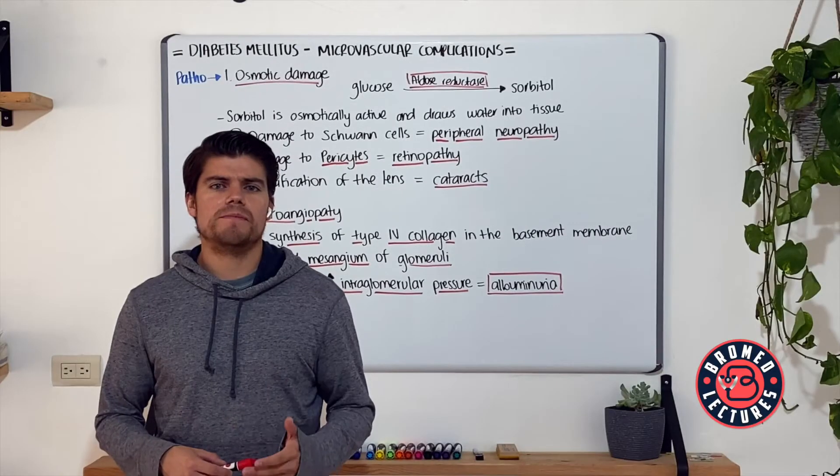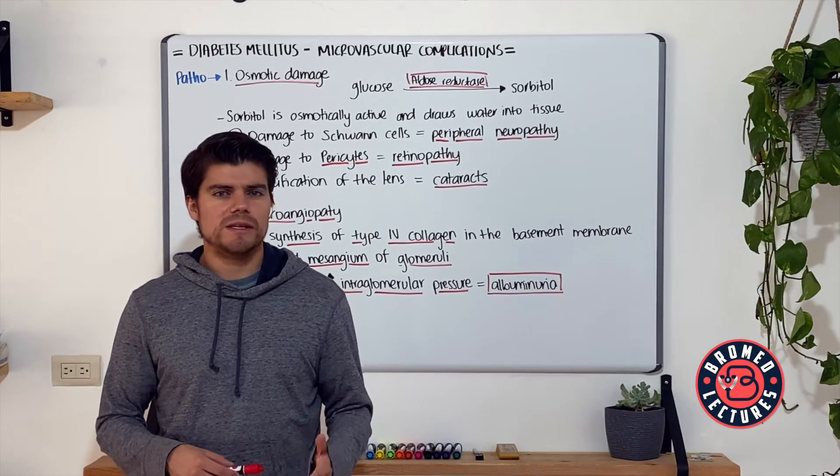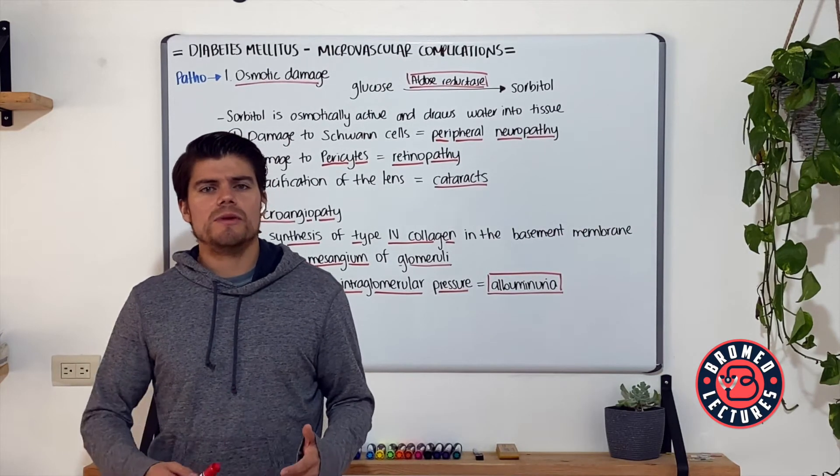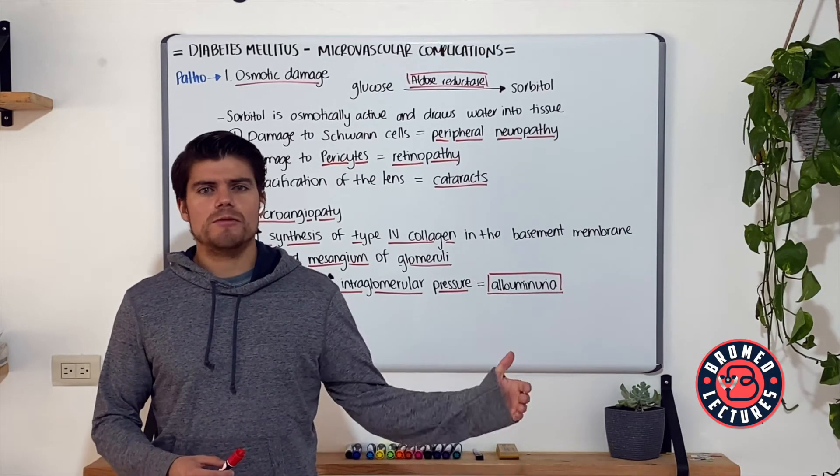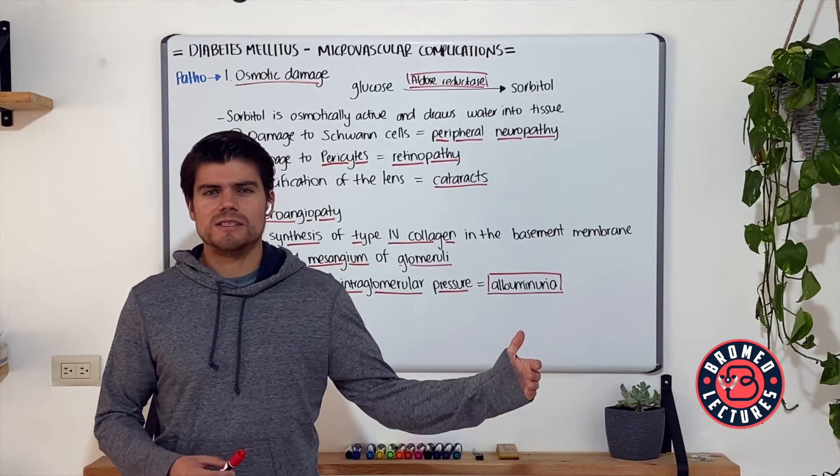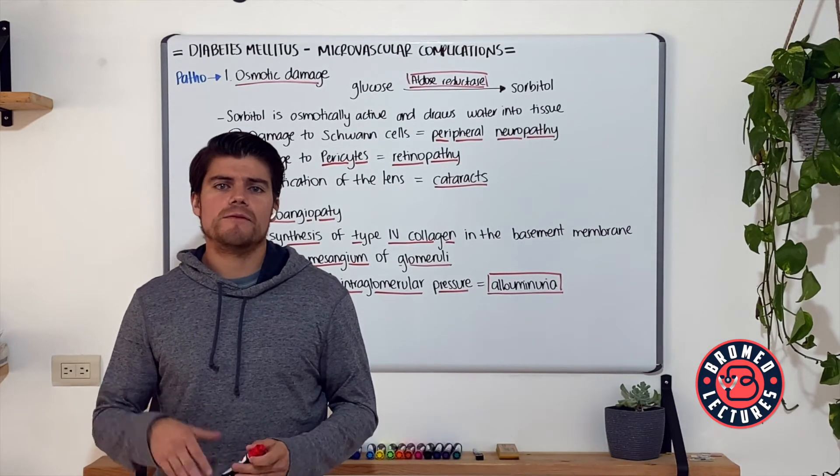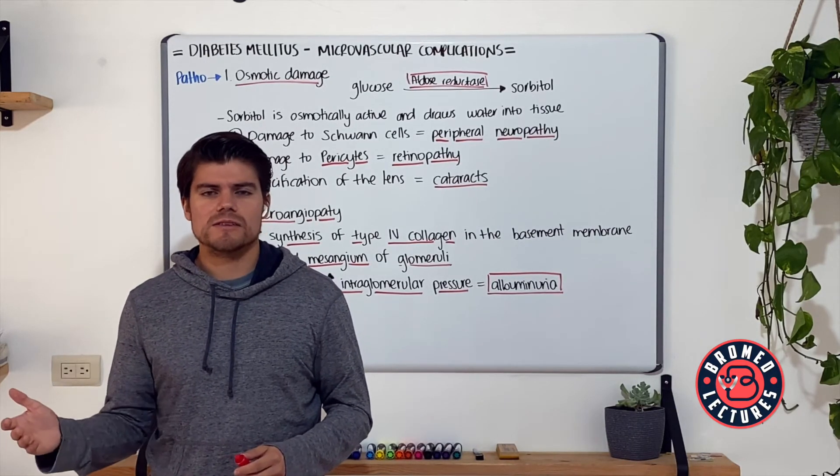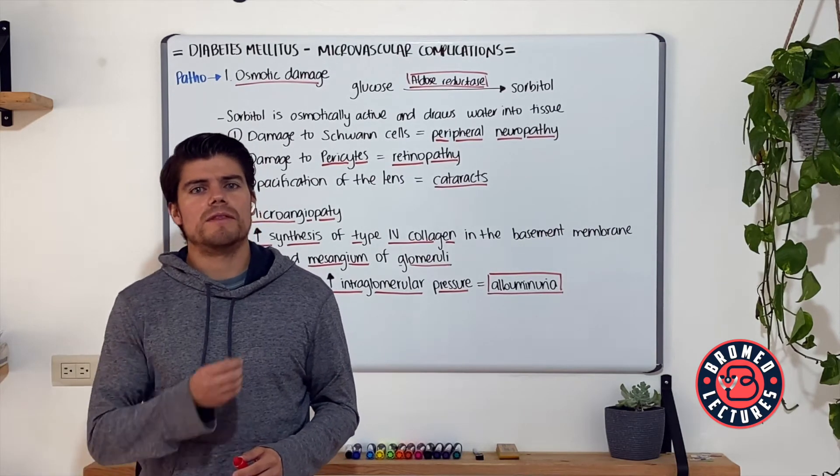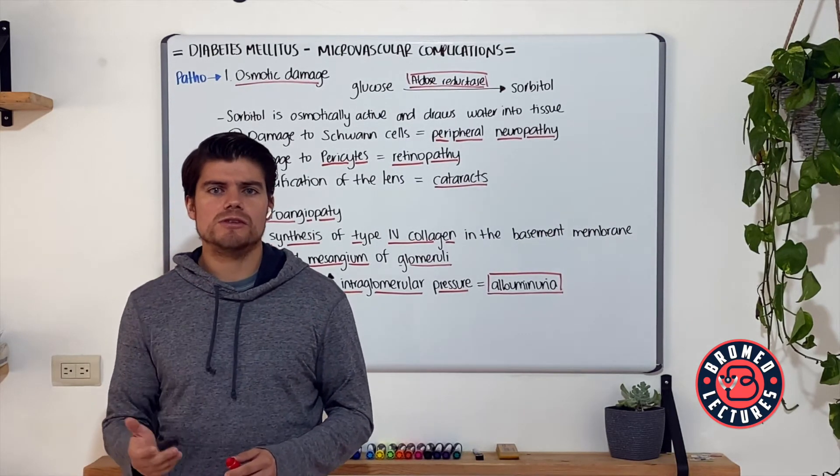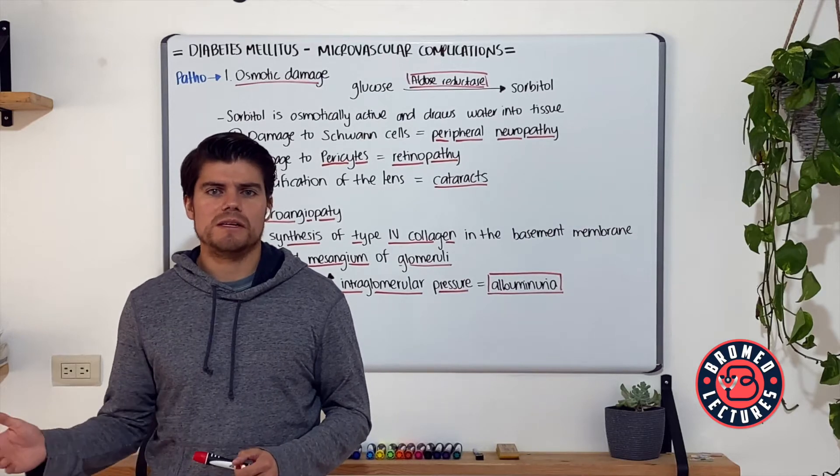To summarize the pathologic mechanisms of the chronic complications of diabetes mellitus: we have the macrovascular complications being promoted by the atherogenesis that non-enzymatic glycosylation promotes. For the other side, we have the microvascular complications from non-enzymatic glycosylation causing microangiopathy in certain tissues, and the osmotic damage to certain cells.